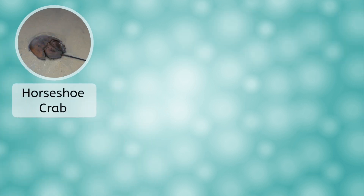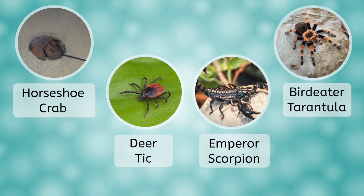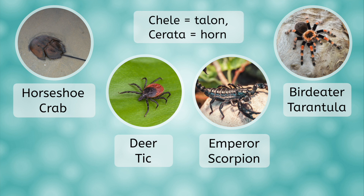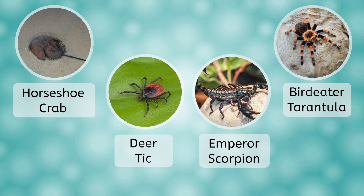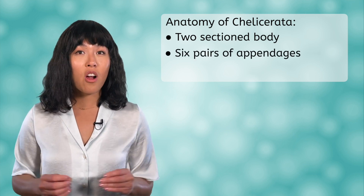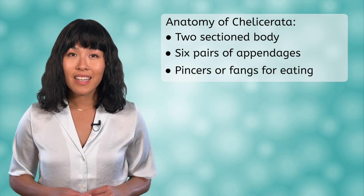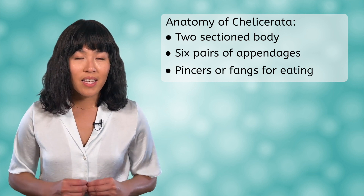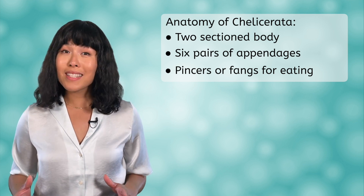The subphylum Chelicerata contains horseshoe crabs, scorpions, and spiders. Its name comes from the Greek for chela, or talon, and serrata, or horn. The organisms in this subphylum date back over 500 million years ago, and some species of horseshoe crabs around today have remained unchanged since the Triassic period — that's one long family tree. Their bodies have two segments and six pairs of appendages, and the pair closest to the front are modified into pincers or fangs for eating. Eating is done by sucking liquid food from their prey.